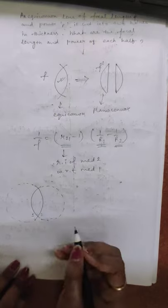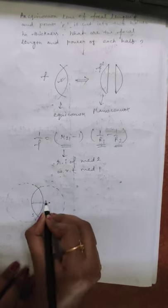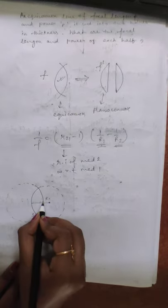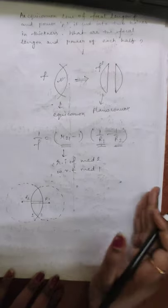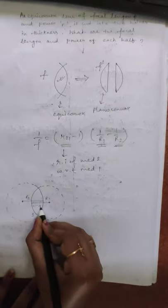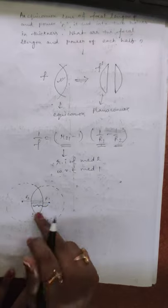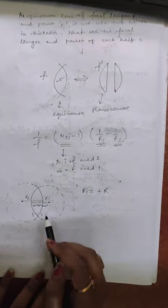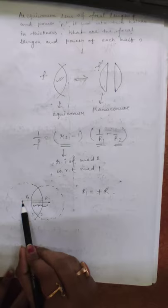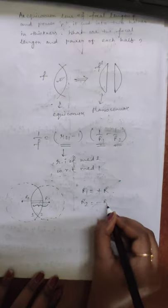This is the first surface and this is the second surface. The radius of the first surface is known as R1 and the radius of the second surface is known as R2. From sign convention, when we are going along the incident ray this is considered positive, and when going opposite to the incident ray this is considered negative. The radius of curvature of the first surface is along the incident ray, so R1 = +r. The radius of curvature of the second surface is opposite to the incident ray, so R2 = -r.